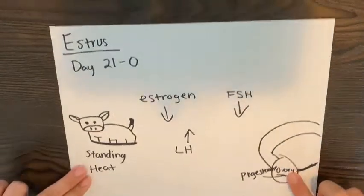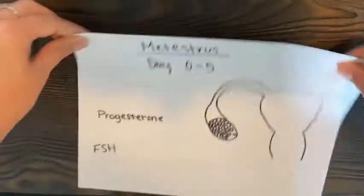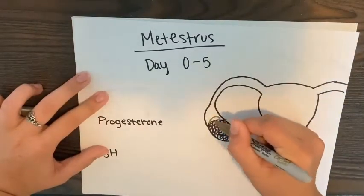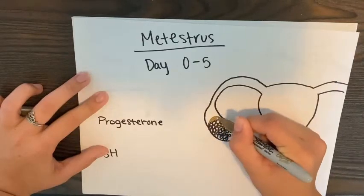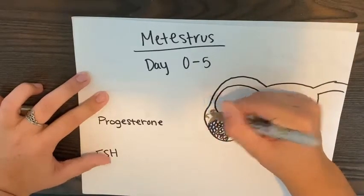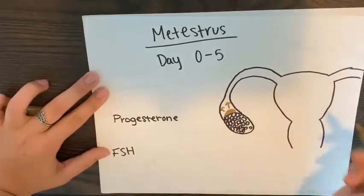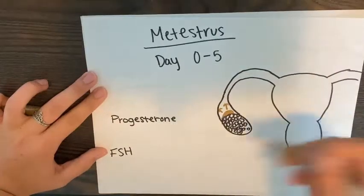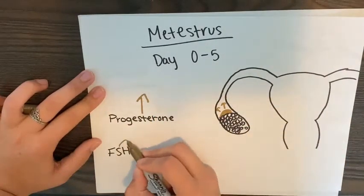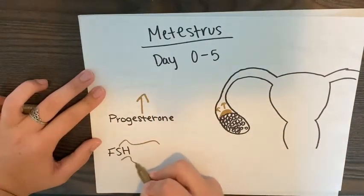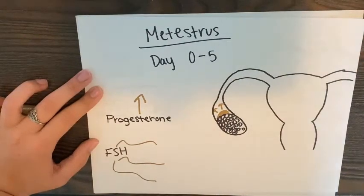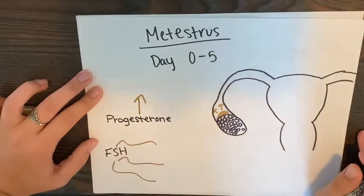Metestrus is 3 to 5 days long and is the time the corpus luteum develops. During metestrus, the corpus luteum is not yet mature but still growing, so progesterone is rising. A surge of FSH occurs at this time that initiates the first follicular wave for the next cycle.